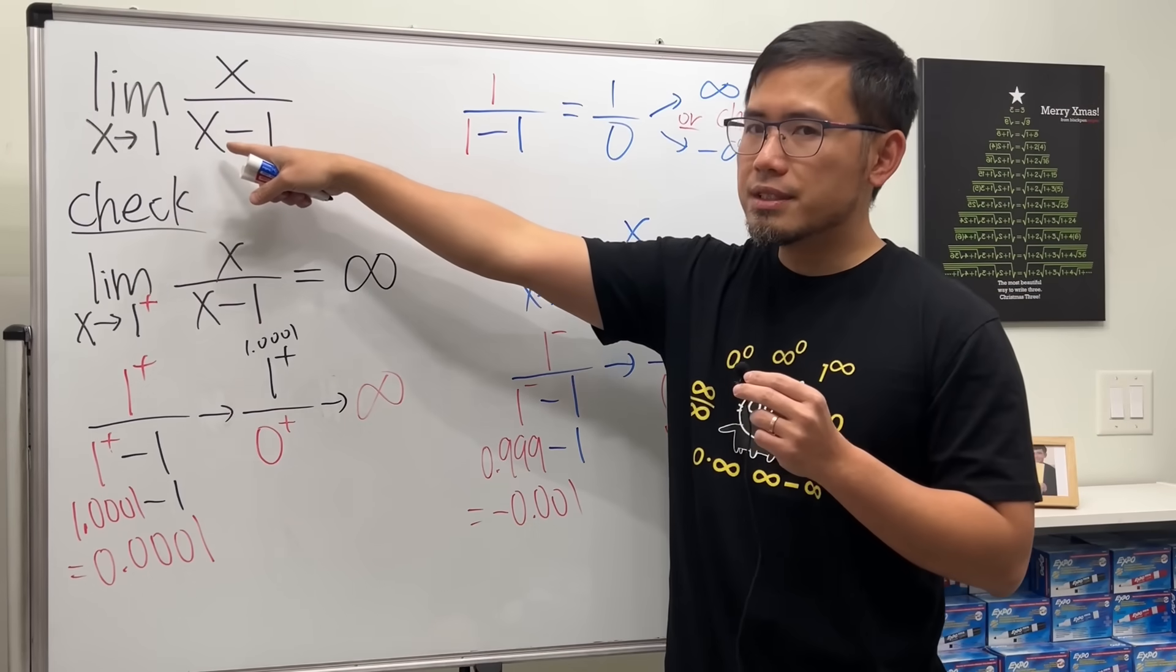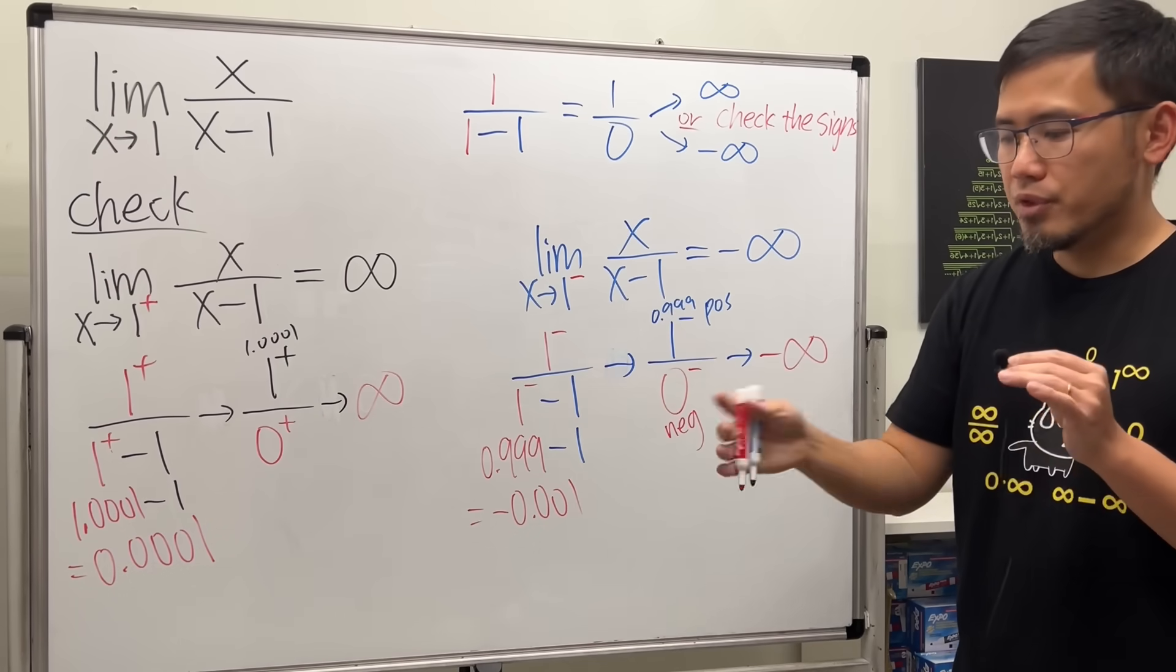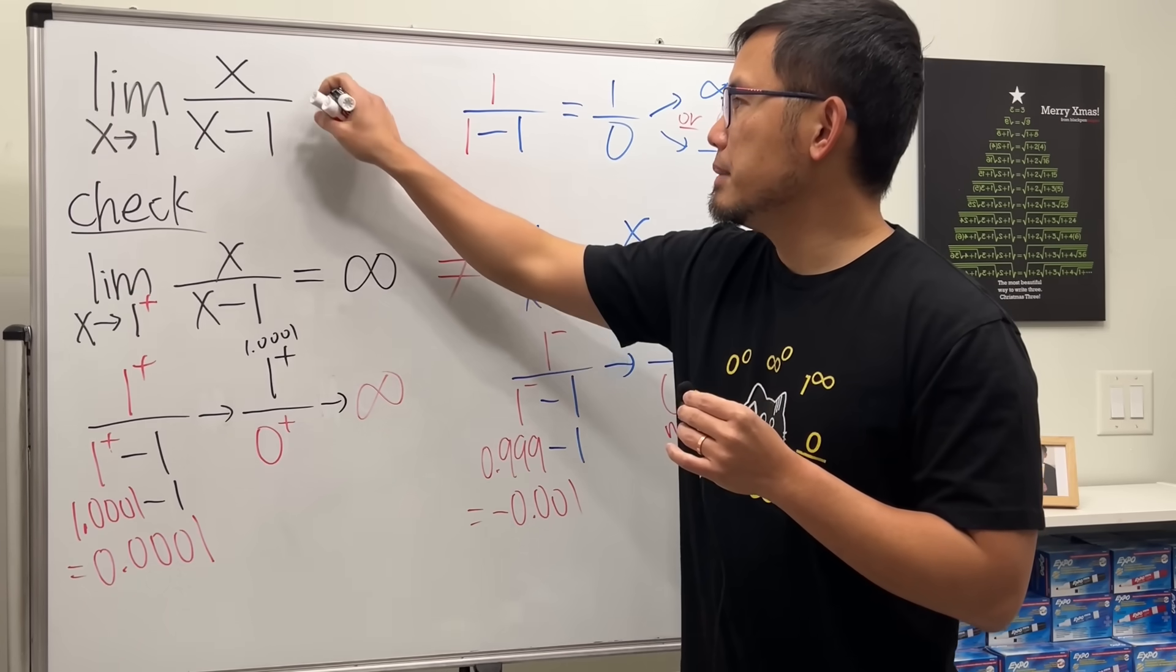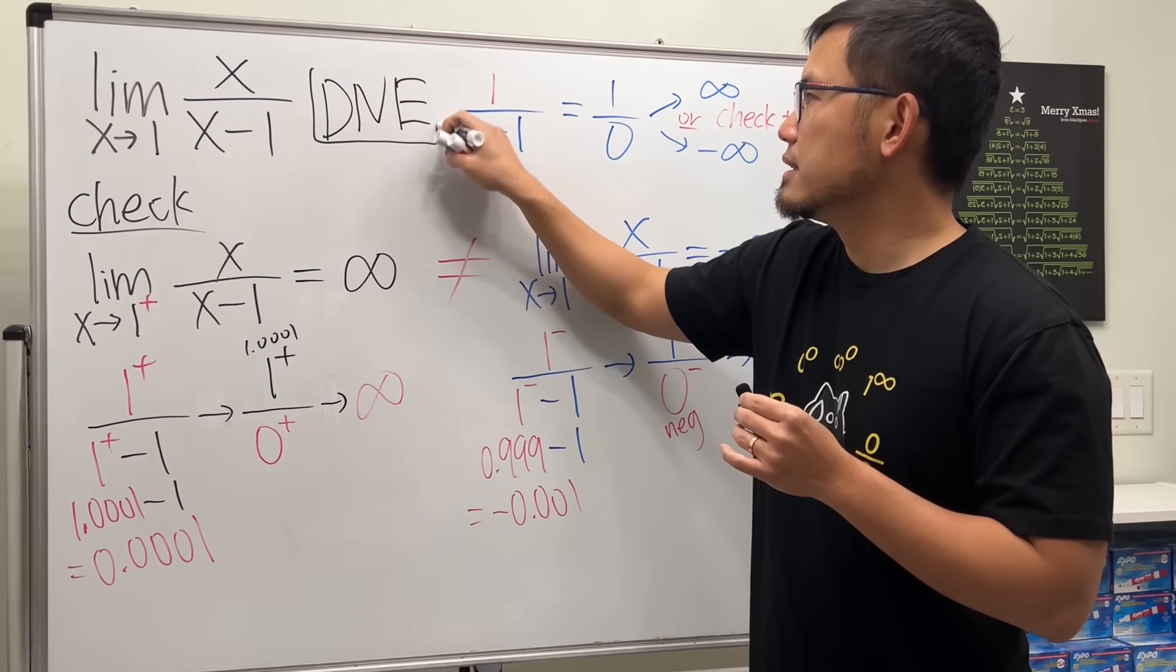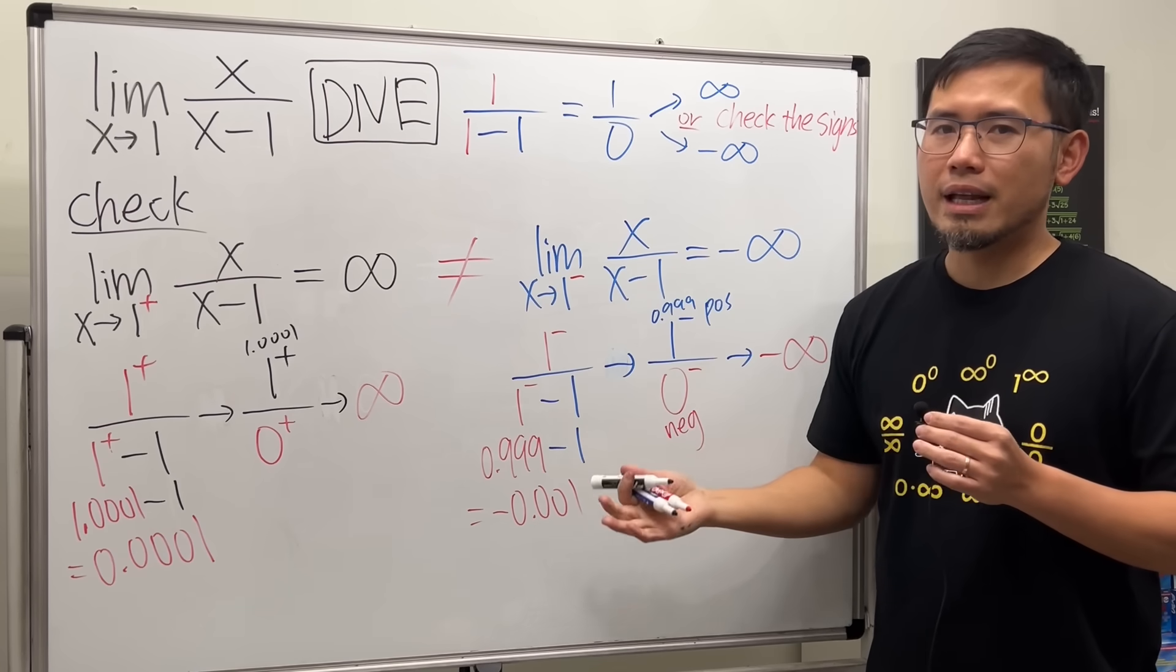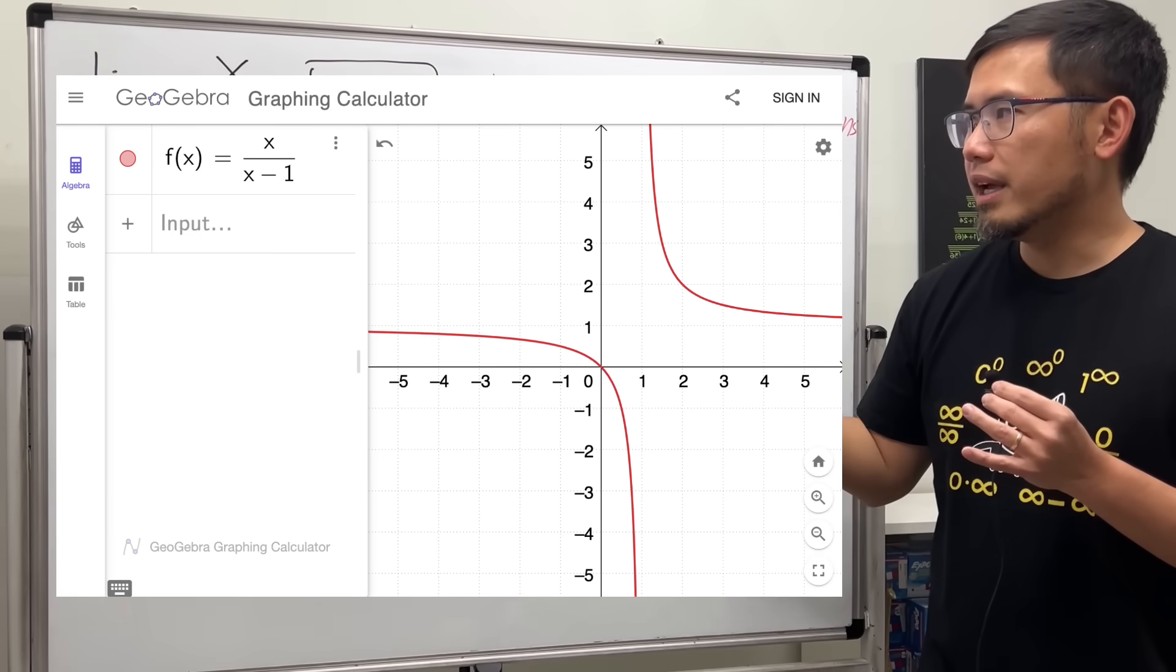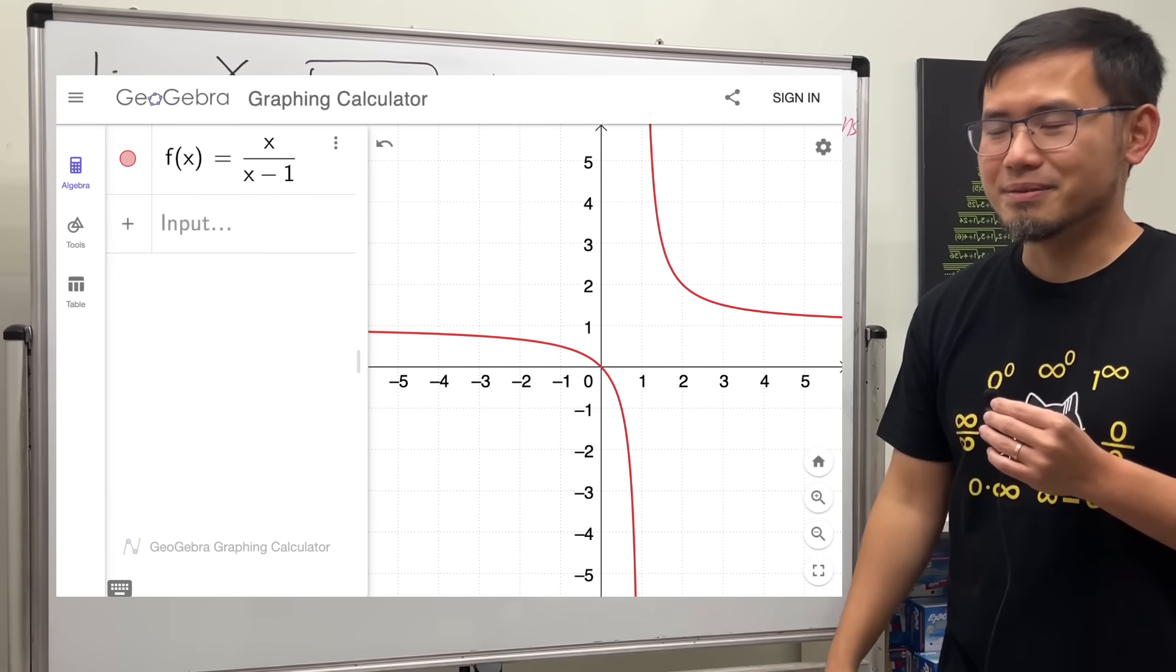Now, to answer this question, after we have this and that, ask yourself, are they the same? No, they are not. These two limits are not equal. Therefore, the conclusion is, this original limit does not exist. So hopefully, this right here helps. Of course, this is more like a computational way to reason things out.